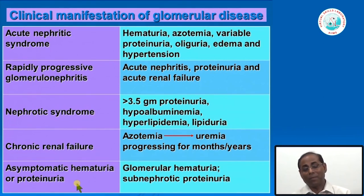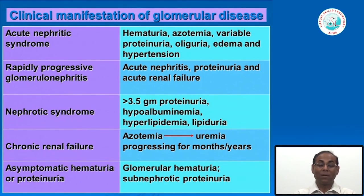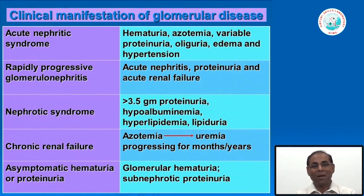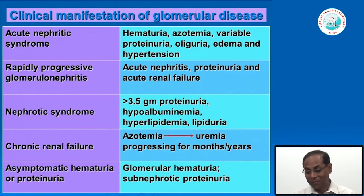Asymptomatic hematuria and/or mild proteinuria constitute the fifth syndrome and must be investigated differently. All the diseases that have been structurally classified can present in only one of these five clinical syndromes. Any structural type of glomerulonephritis can present with one or more of these clinical syndromes. That is why it is very important to understand the clinical-pathological correlation in diagnosing renal and glomerular diseases particularly.